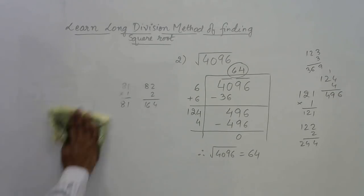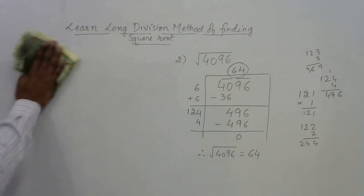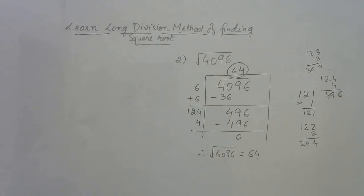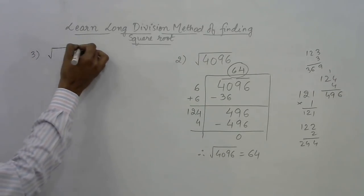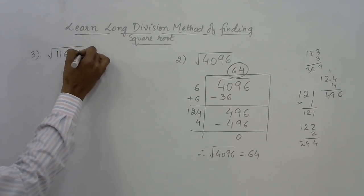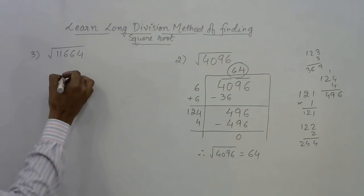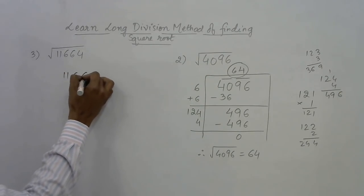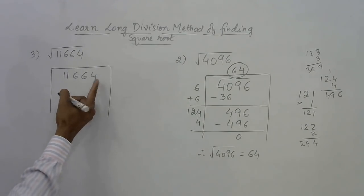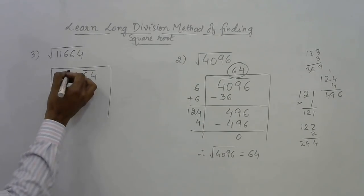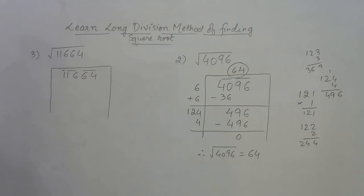In the third example, I am taking number 11664. Let us write 11664 in the long division sign and make pairs from the right hand side: 64 forms a pair, 16 forms a pair, 1 is left out.